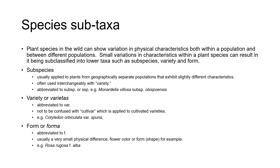Plant species in the wild can show variation in physical characteristics both within a population and between different populations. Small variations in characteristics within a plant species can result in taxonomists using subclassifications of species such as subspecies, variety and form. Subspecies is usually applied to plants from geographically separate populations that have slightly different phenotypes. Subspecies is often used interchangeably by taxonomists with variety. When writing subspecies in a plant name, you can abbreviate it to SSP. or subsp. — though using SSP can easily be confused with the plural of species, which is SPP, so you might find it better to write subsp.